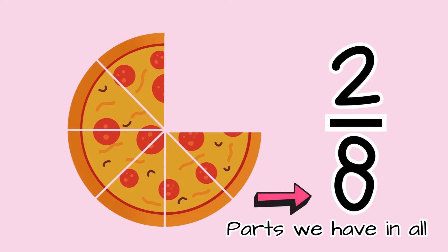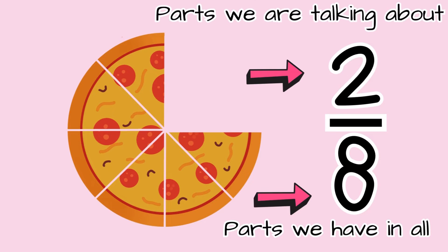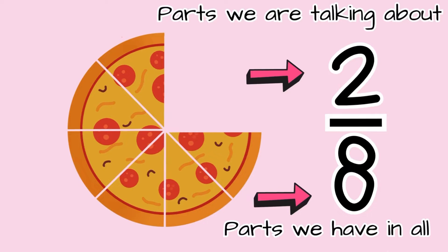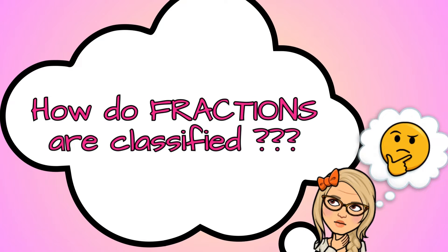The number at the bottom is called denominator and it is how many parts we have in the whole. The number at the top is the numerator and that means how many parts we're talking about. But now let's begin.